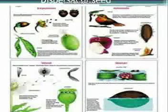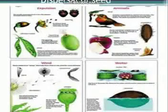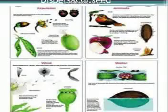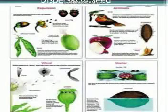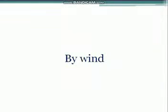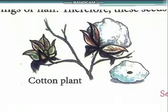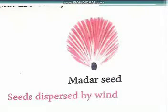Dispersal of seeds occurs in many ways: by wind, by water, by animals, and by explosion of fruits. First, dispersal by wind — seeds of some plants like cotton, madar, and drumstick are small, light, and have wings or hair. Therefore these seeds are easily carried to distant places by wind.